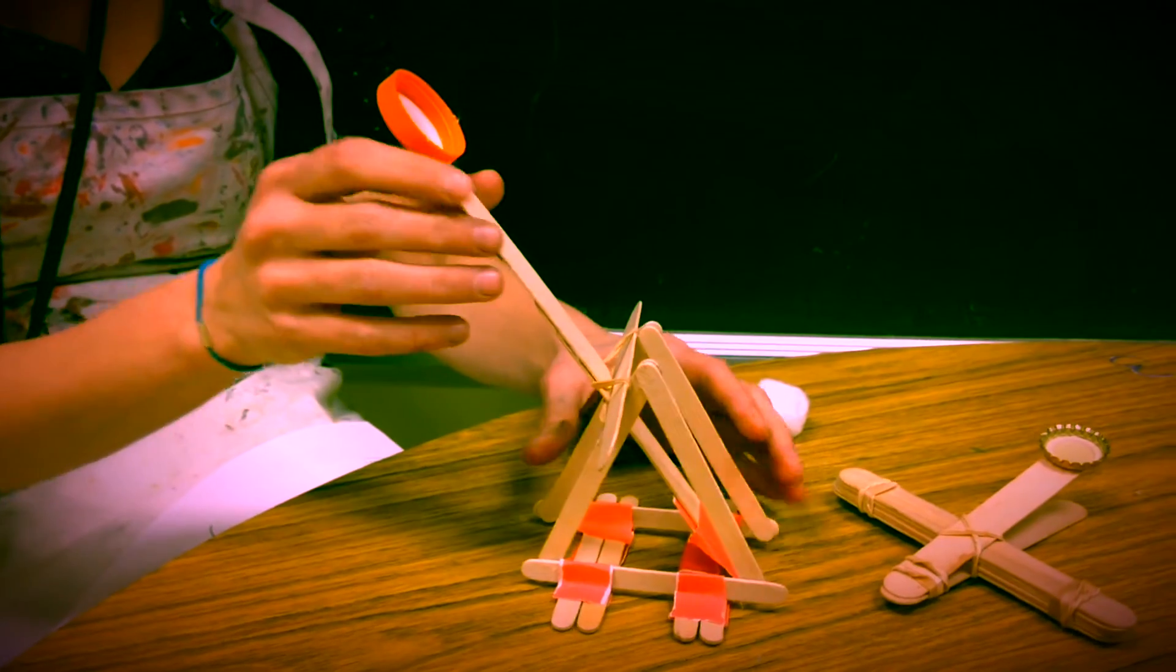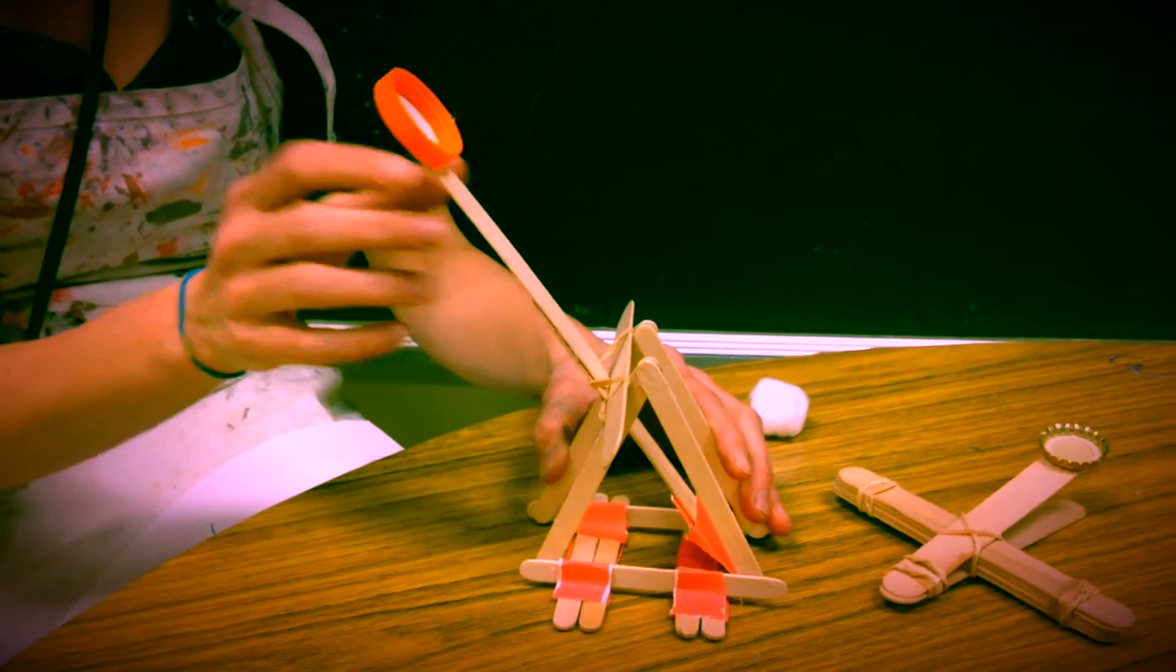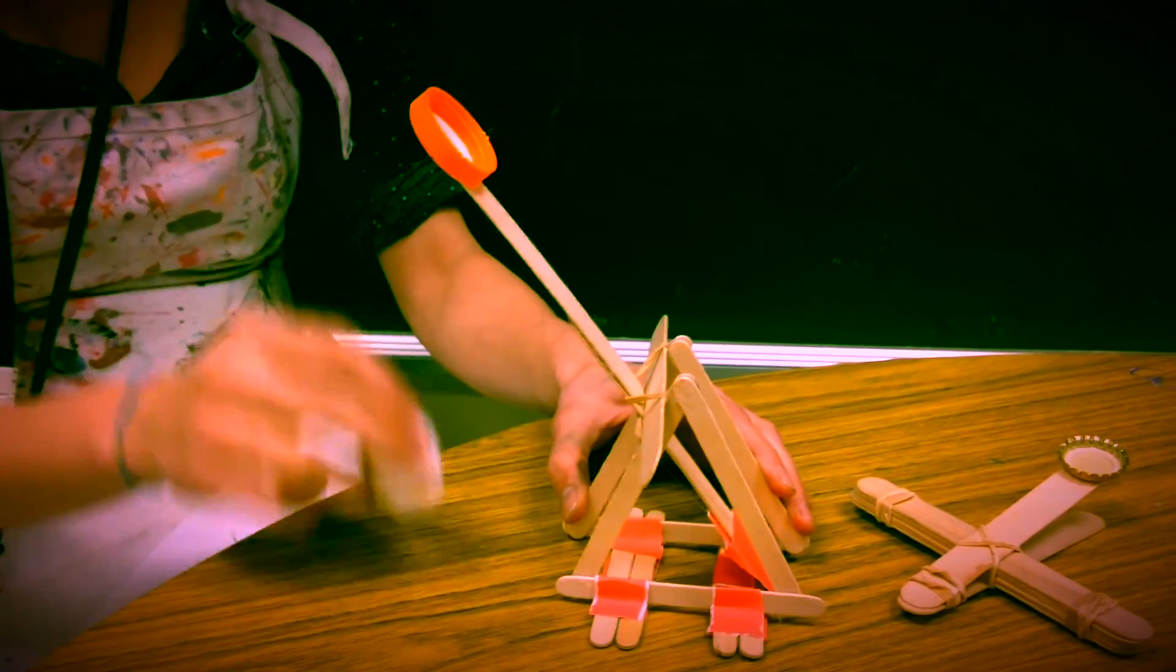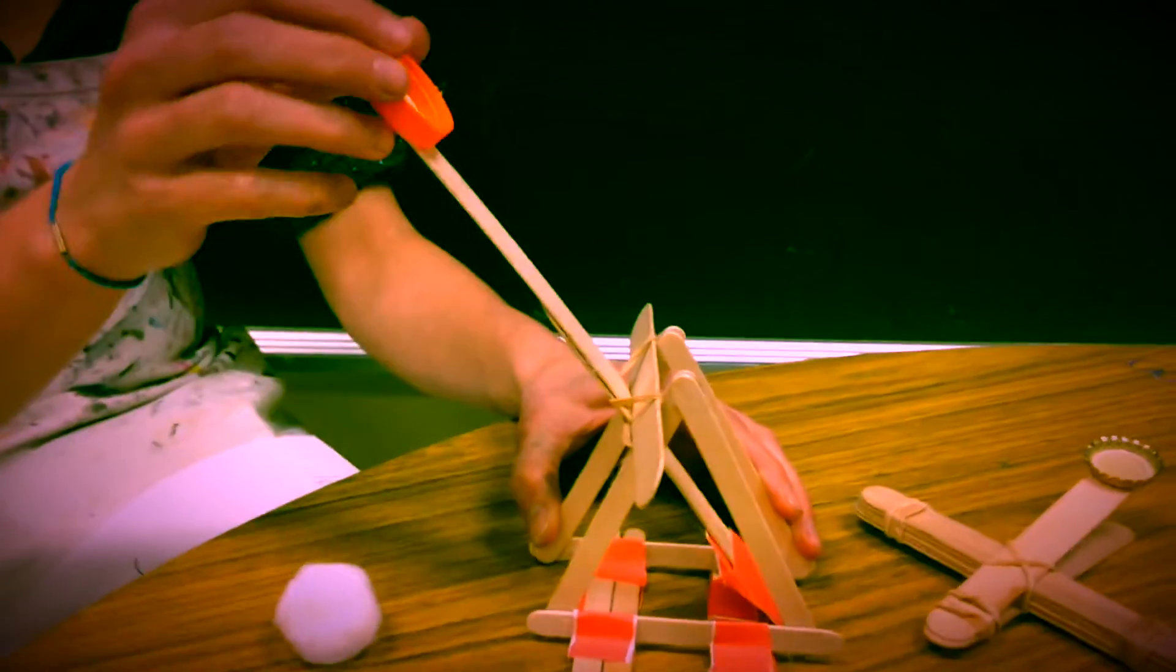Some kind of launch arm, some kind of bucket to hold your snowball in, and then something that creates torsion like the rubber bands.